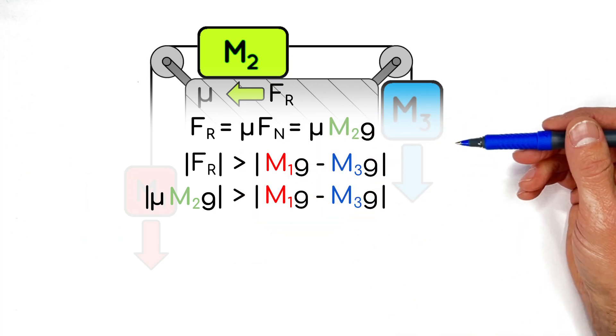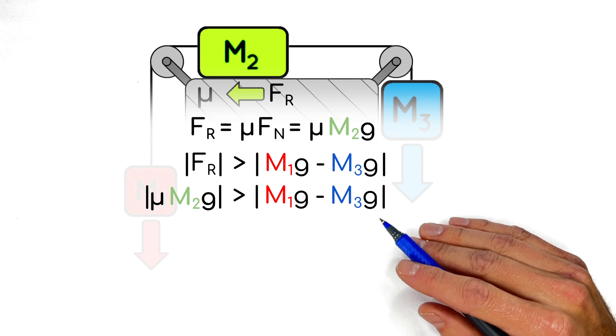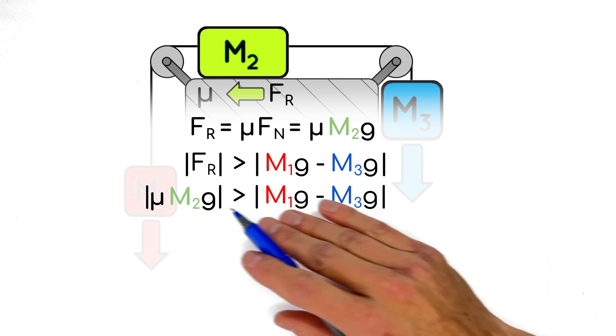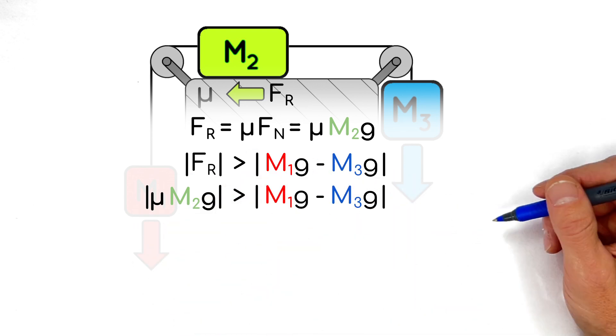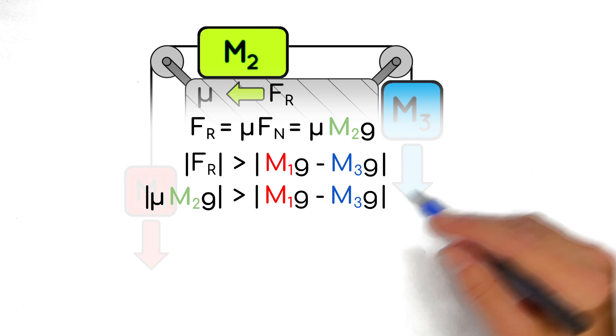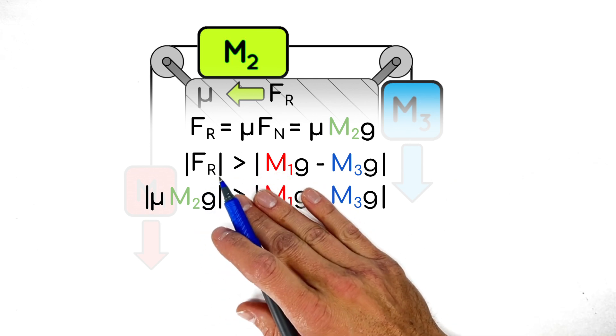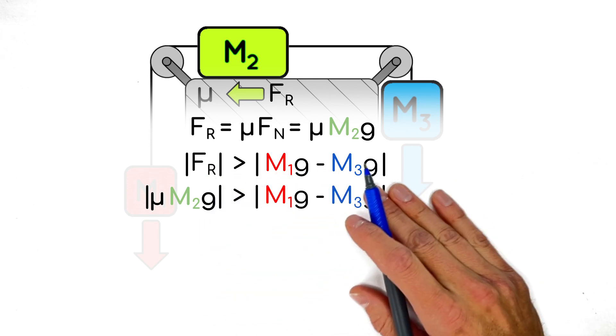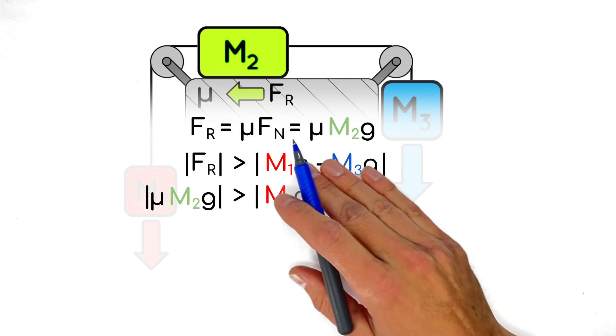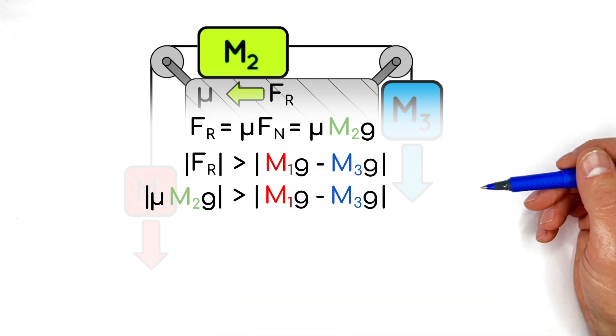Now expanding out this term for friction, we get this, a simple mathematical check to see if our little system of blocks here is going to accelerate. So if you plug in your numbers and you find the magnitude of this friction force is greater than this difference in weights, then the friction is going to keep the whole system from moving. That is to say the system is going to remain at rest, assuming we released it from rest.